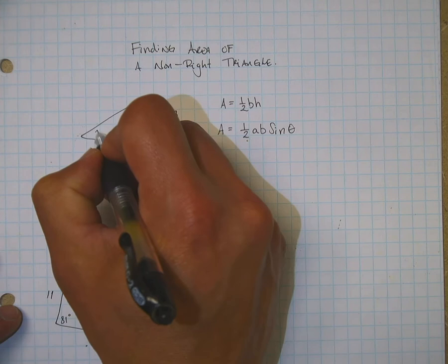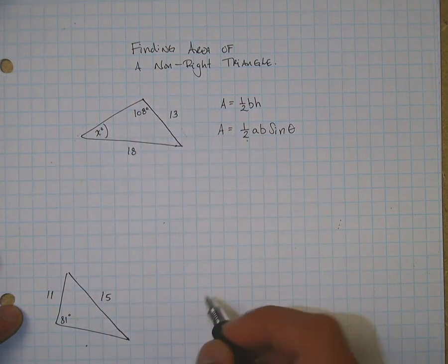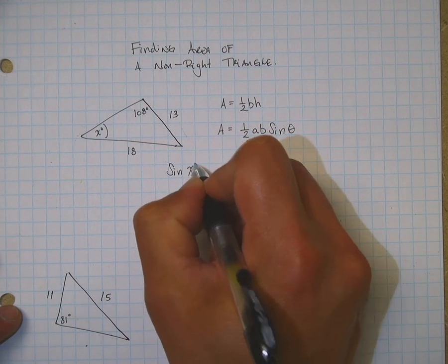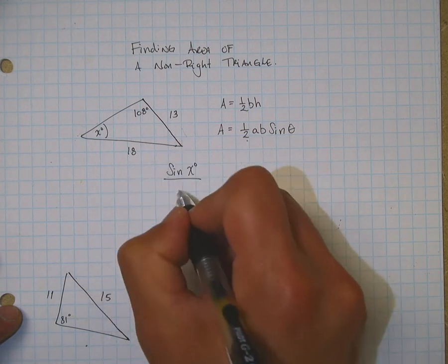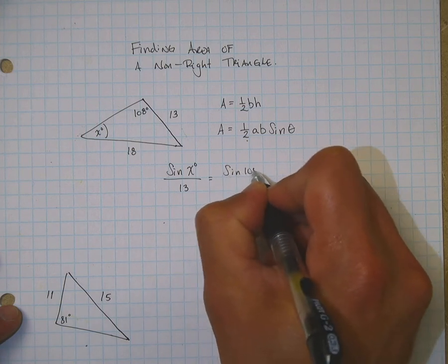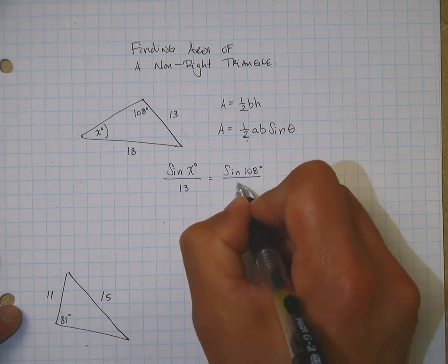I'll call that x using the law of sines. So, the law of sines says, we have sine of x degrees over 13 is equal to the sine of the other angle over 18.